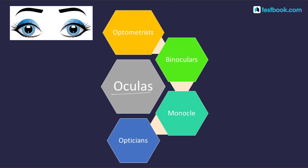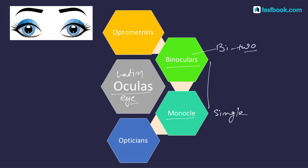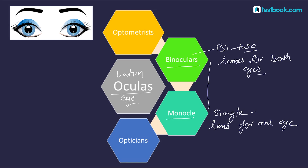Our next word is oculus — of Latin origin, meaning eye. We have monocle and binoculars. Mono means single, and bi means two. A monocle is a lens for one eye. Binoculars are field glasses that increase the range of two eyes — lenses for both eyes.